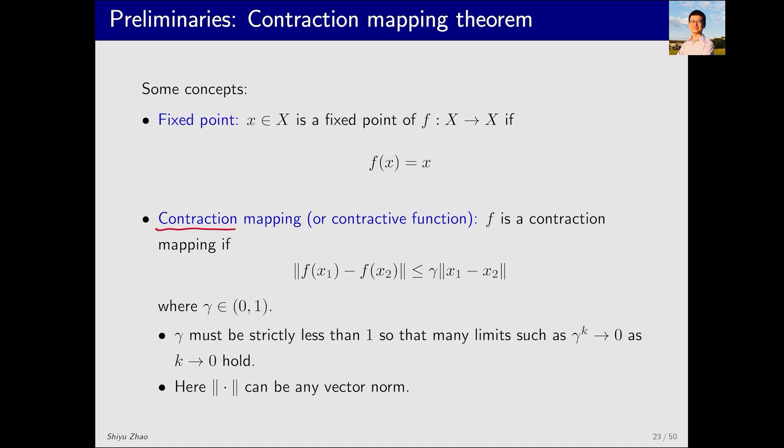Another concept is contraction mapping or contractive function. A function is called a contraction mapping if it satisfies this inequality, which means that for any two points, the distance between their function values is less than the distance between the two points themselves multiplied by a factor gamma which is less than 1.